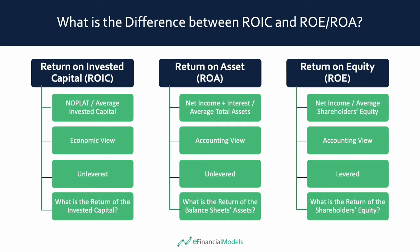Return on equity, ROE, divides a company's net income by the company's average equity book value. Same as ROA, ROE is calculated from a pure accounting point of view. If a company uses more debt financing, typically ROE can go up. Therefore, ROE is influenced heavily by financial leverage, which makes it very hard to compare two similar companies.